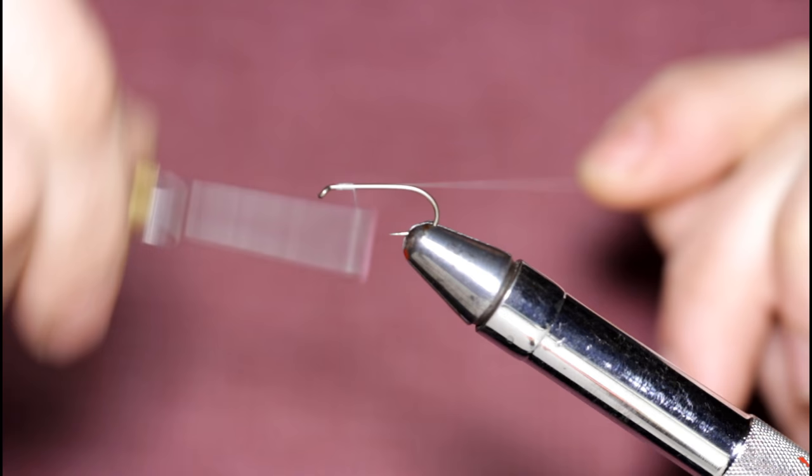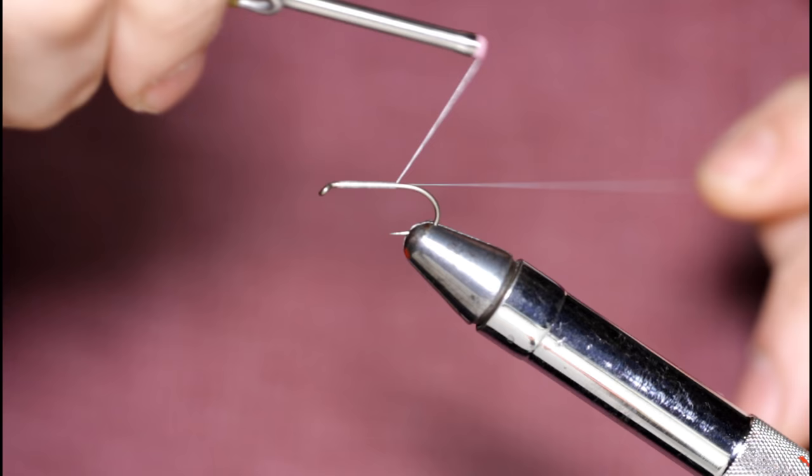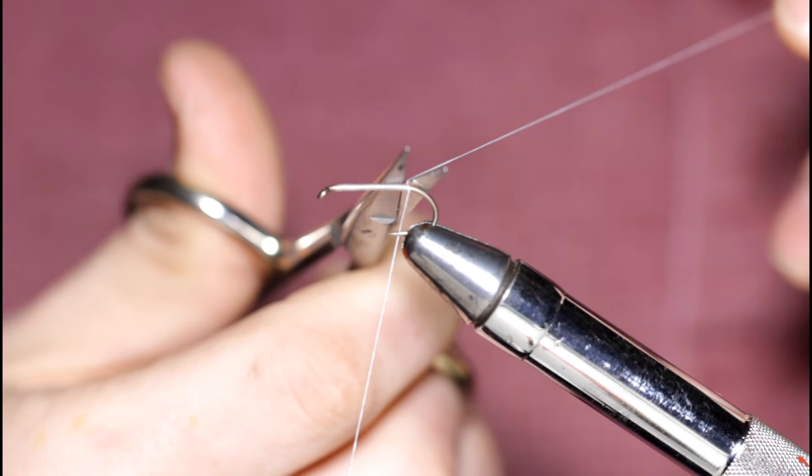I'm going to start with a size 8 nymph wet hook in the vise. I'm going to start some 210 UTC thread in white. I'm just going to make a thread base here and snip off the tag as I get to about the barb.